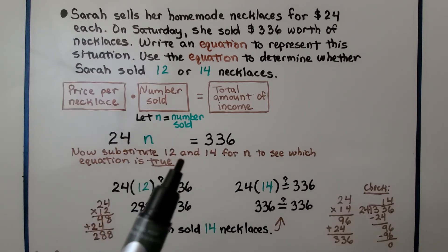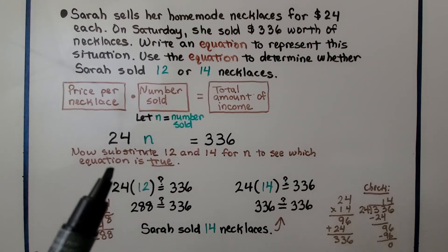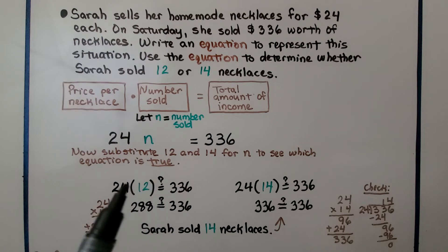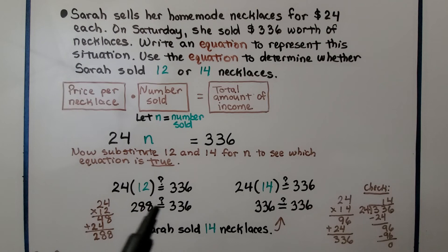Now we substitute 12 and 14 to see which equation is true. We have 24 times 12. Is that equal to $336? We have our equal sign with a question mark over it saying we're not sure if this is true. We can do 24 times 12 and we see it's $288. Is $288 equal to $336? No. So, this is a false statement.